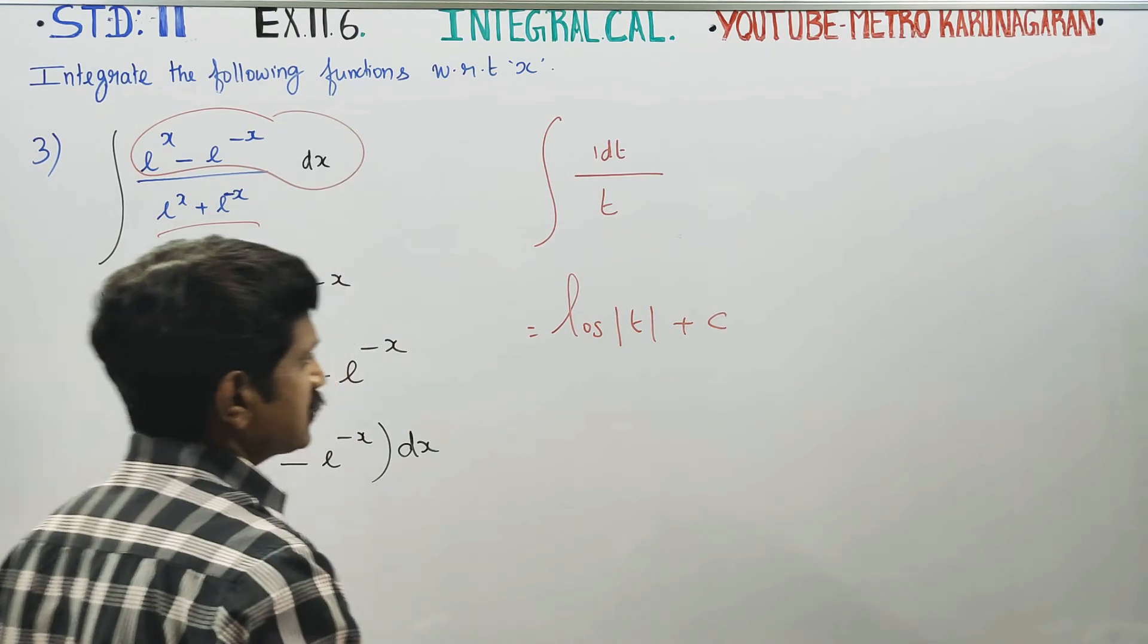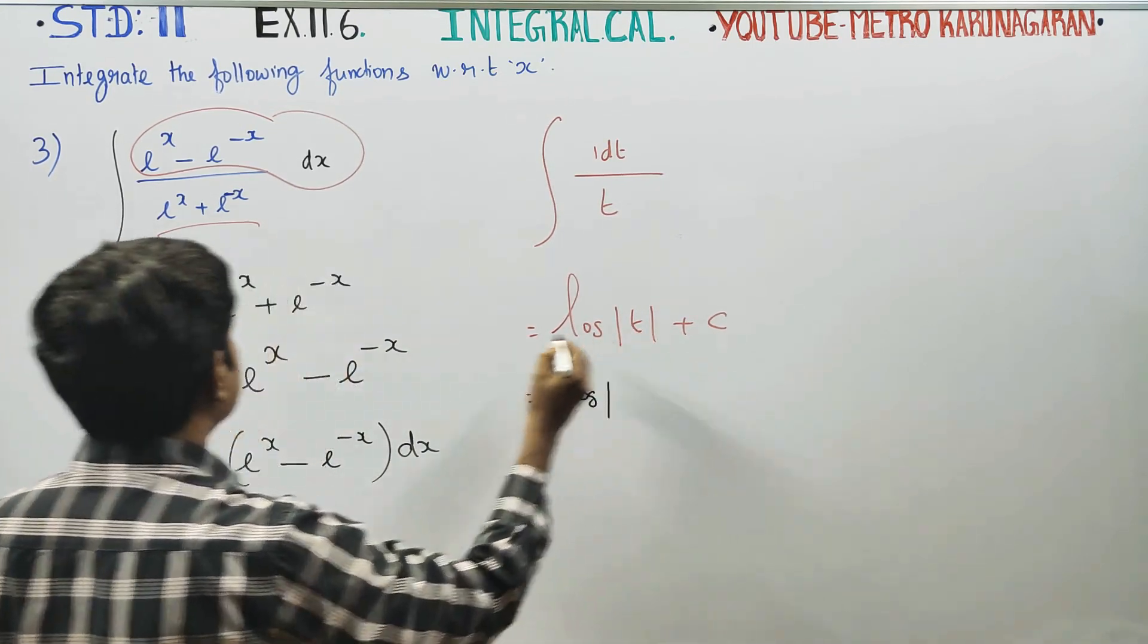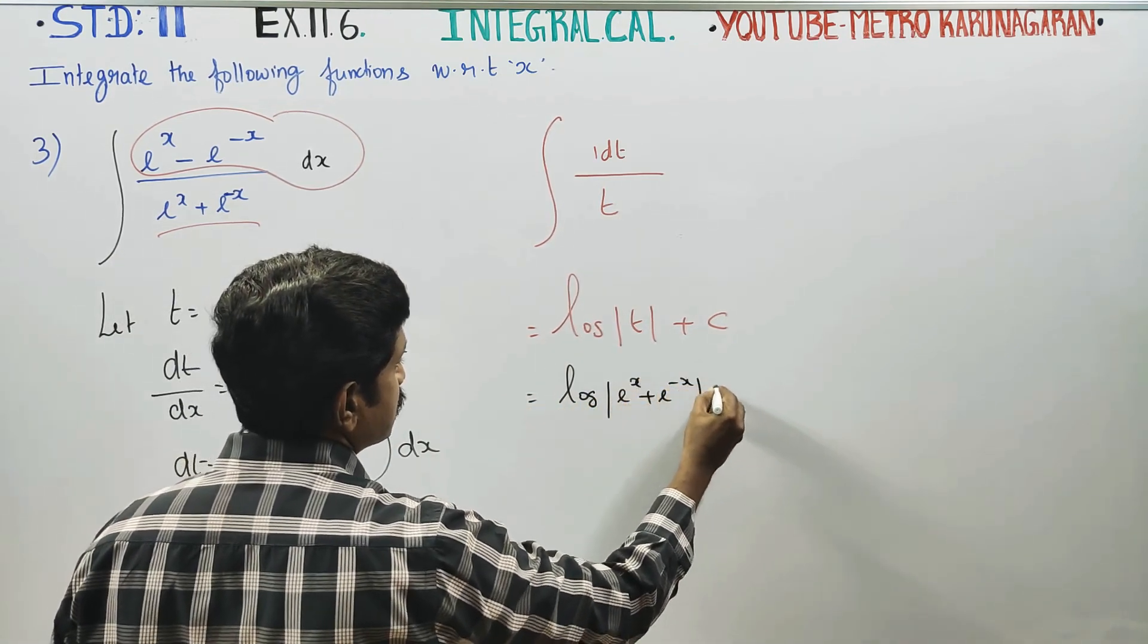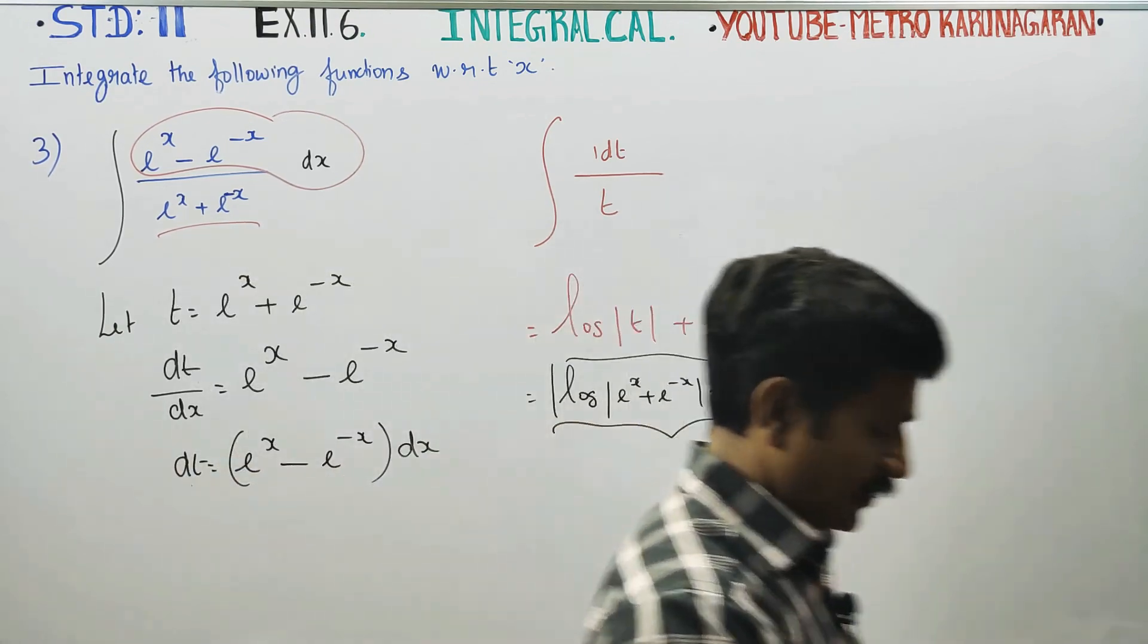You have to replace T because it is a temporary substitute. Instead of T, use E power X plus E power minus X plus C. This will be your final answer. Thank you.